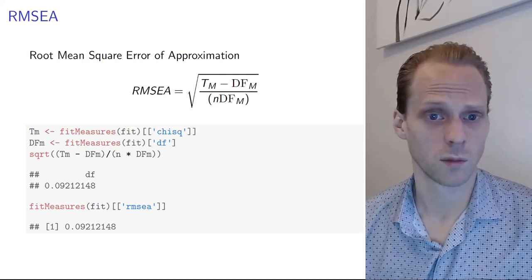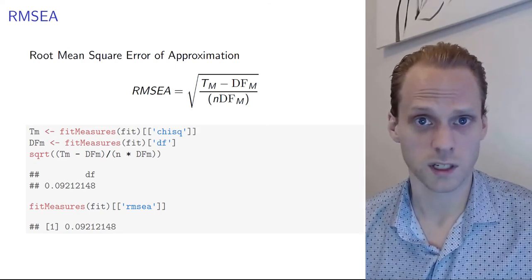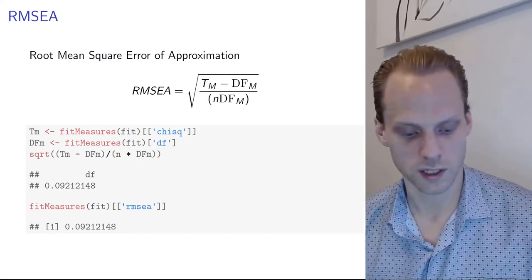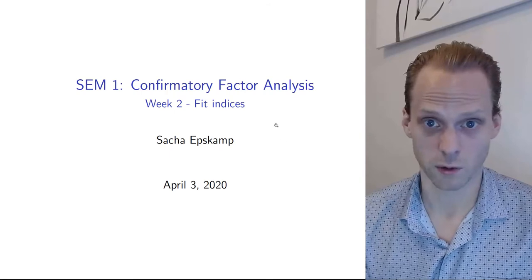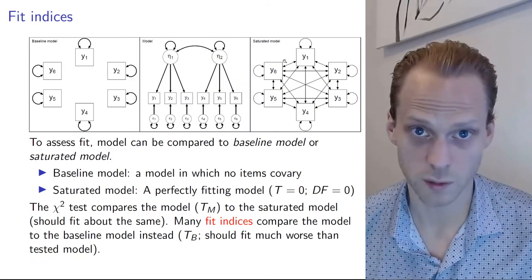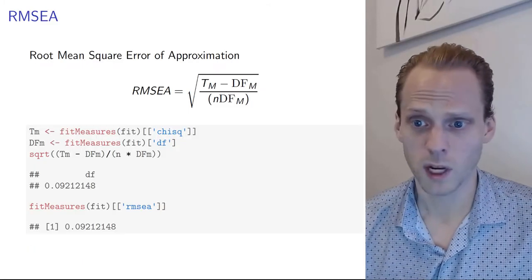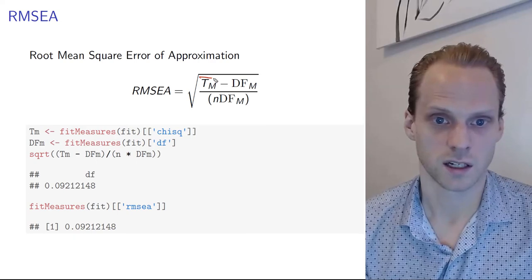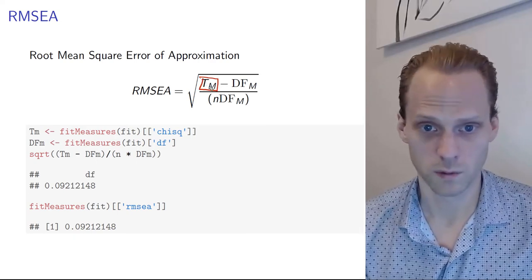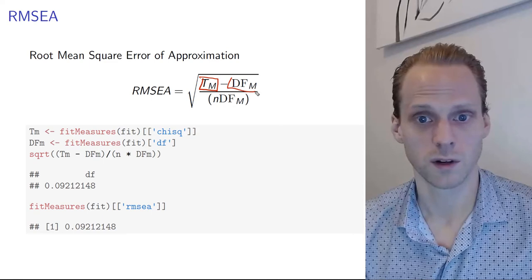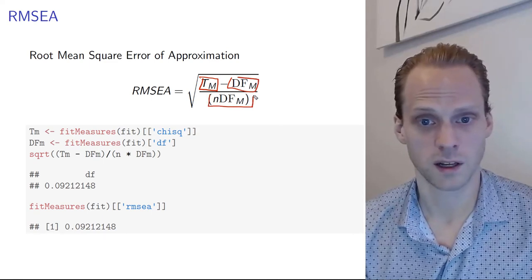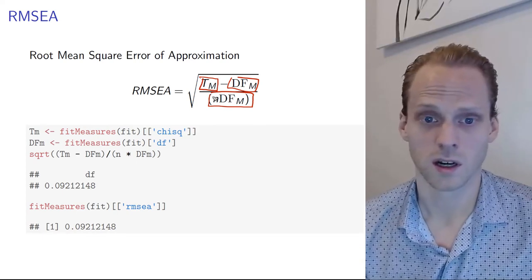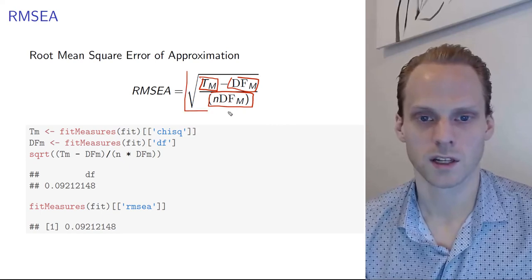The first fit index I want to talk about is the root mean square error of approximation, RMSEA. This is a way to see if your model is close to the saturated model — not exactly the saturated model like the chi-square test, but close to it. We obtain the RMSEA by taking our test statistic from the model, minus the degrees of freedom from the model, and dividing this by n times degrees of freedom from the model. Then we take the square root of that.